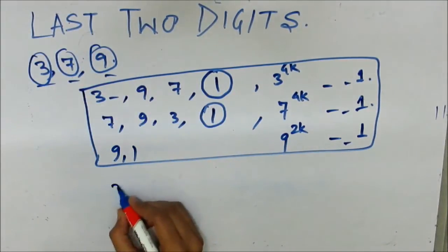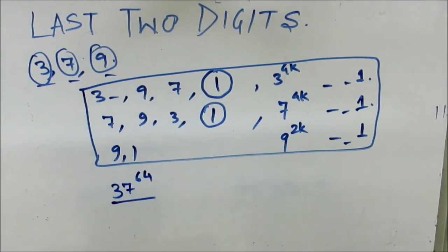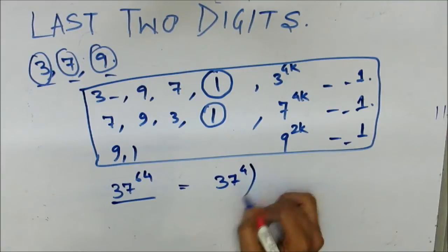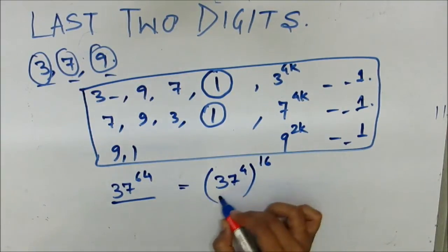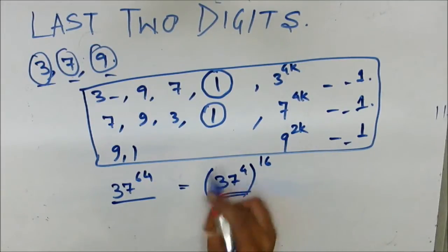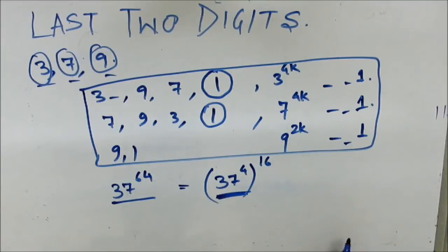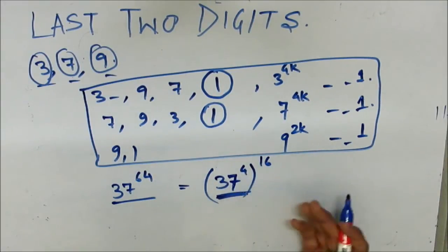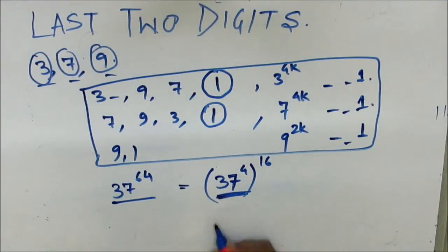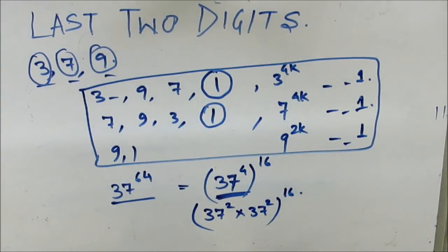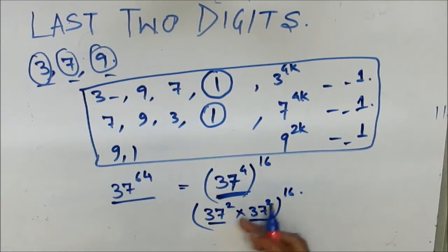For example, to calculate the last two digits of 37 to the power 64, we can rewrite this as (37^4)^16. We know 37^4 will end in 1, so we can apply our technique for numbers ending in 1. To find the last two digits of 37^4, we write it as (37^2) × (37^2), all to the power 16. The last two digits of 37^2 end in 69.